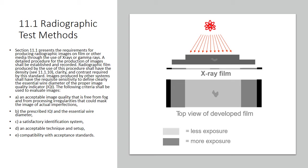If radiography is being used, these milestones must be met: you need to achieve the prescribed IQI, and you've got to have an identification system showing what you're shooting — for example, weld number 247 on a specific pipeline — along with an acceptable technique and setup.